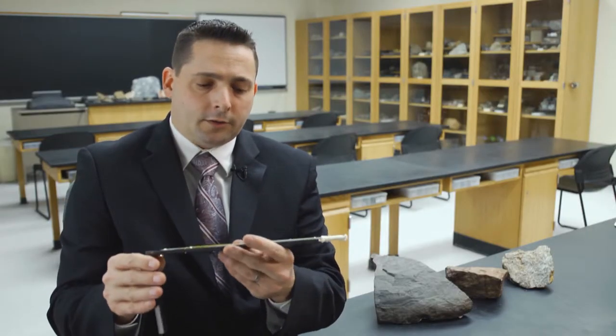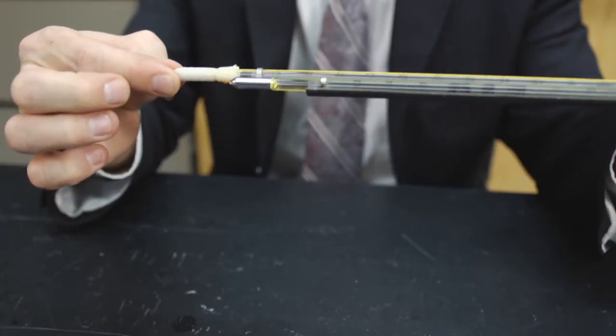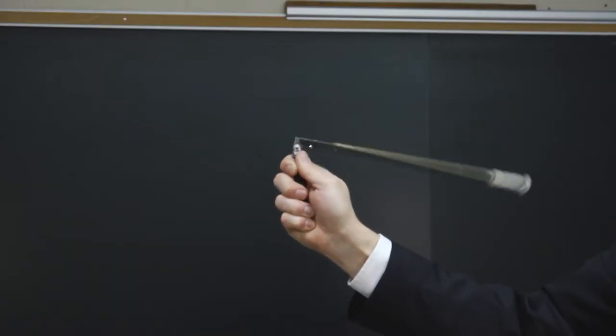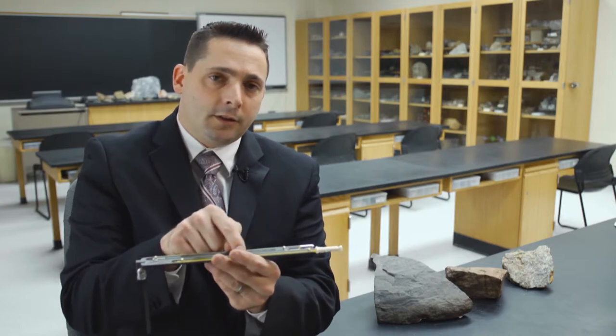Now, the way this works, once the wet bulb is wet, we will sling the psychrometer around, and some of the moisture will evaporate from the cloth and lower the temperature on the wet bulb.